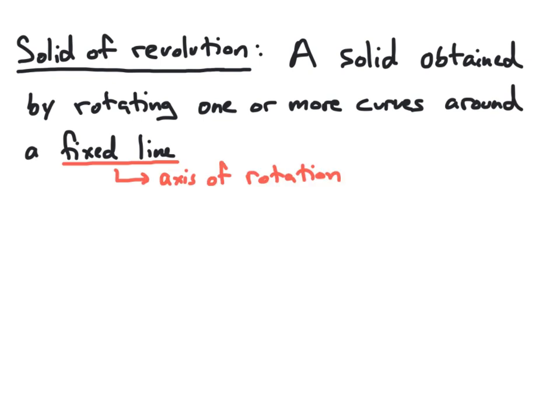This fixed line is often called the axis of rotation. And for purposes of this video, we're going to focus on examples where the axis of rotation is either horizontal or vertical. To describe a solid of revolution, we start by describing a region in the plane bounded by one or more curves.